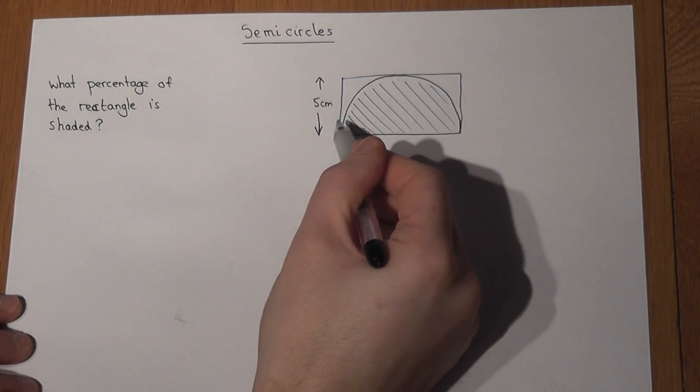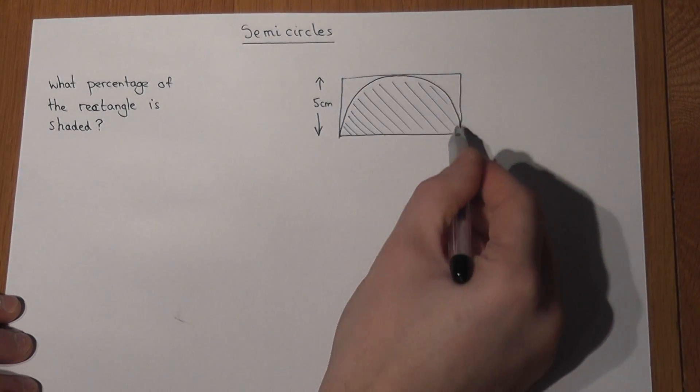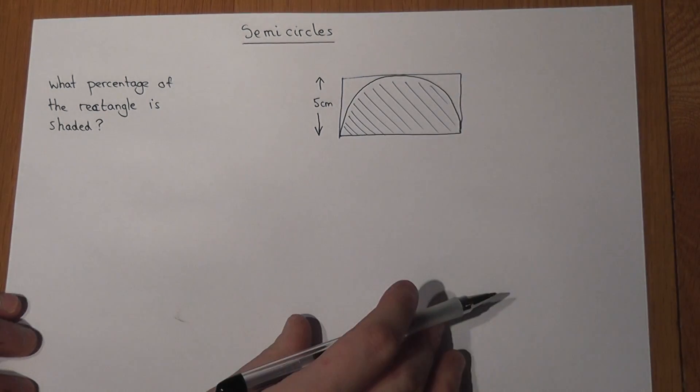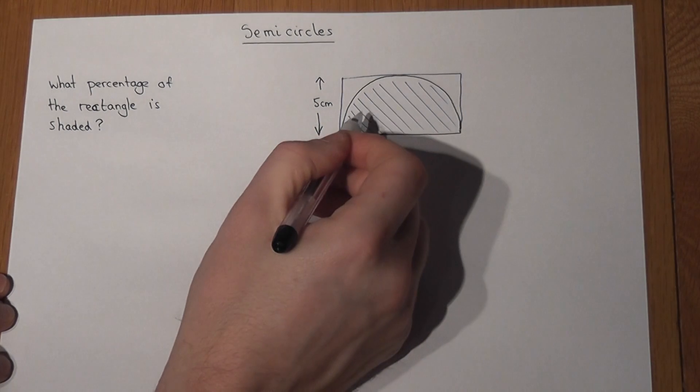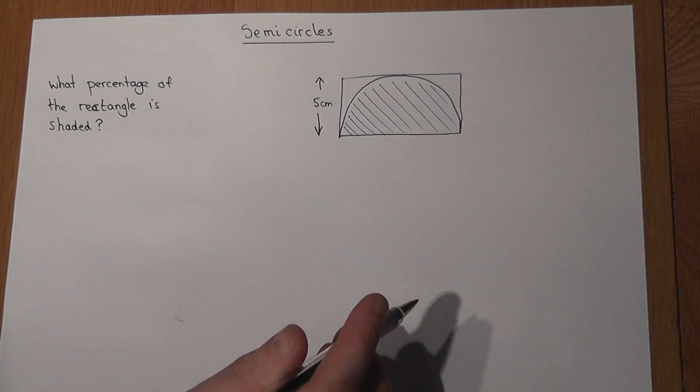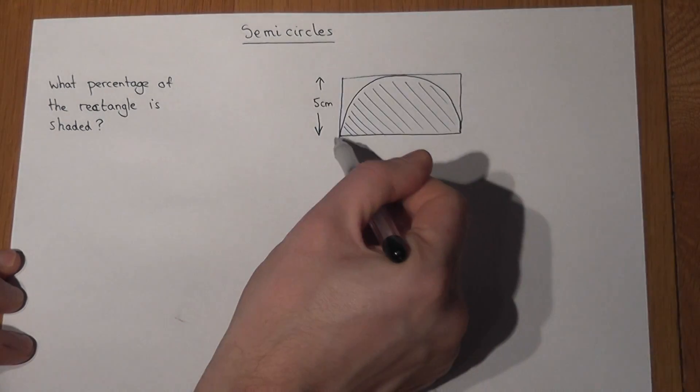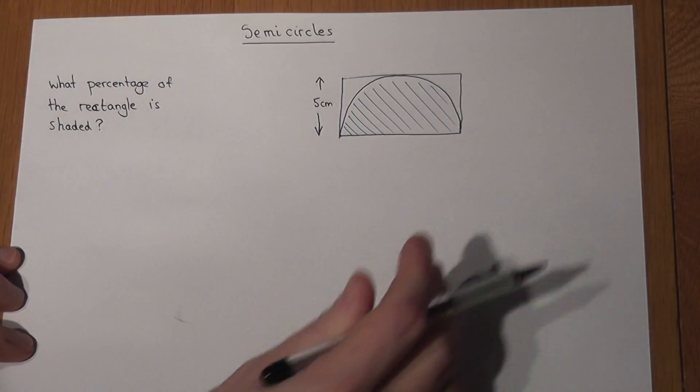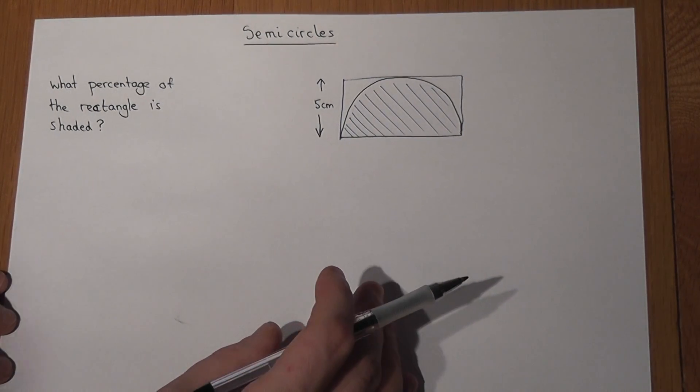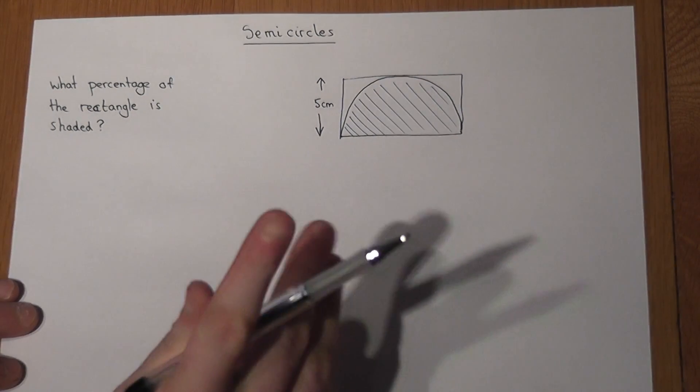In this video we have a rectangle within which there is a semicircle and the semicircle has been shaded in. And the question is asking what percentage of the entire rectangle has been shaded?